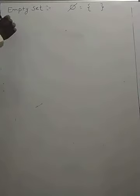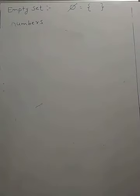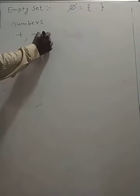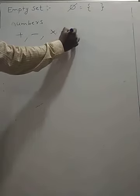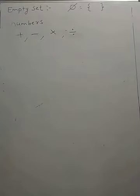After the invention of numbers, we defined some operations on numbers: namely addition, subtraction, multiplication, and division. These are the four basic operations we defined on the set of numbers. Likewise, we also defined some basic operations on sets.